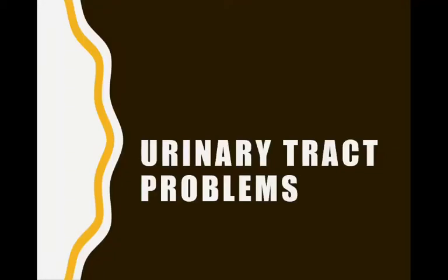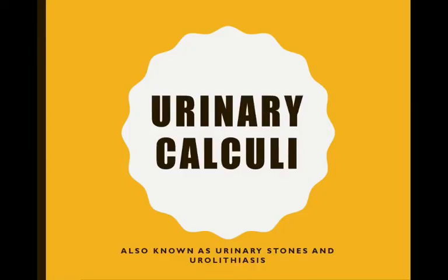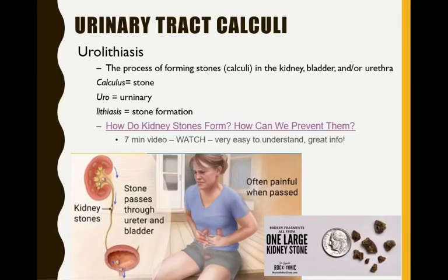This is the voiceover for urinary tract problems. The first problem is renal stones, also known as urinary calculi or urolithiasis. 'Lithiasis' means stone formation, so if you ever see a 'lithiasis' you want to look at what's in front of it to find out where the stones are. 'Uro' is urinary, so urolithiasis. You'll also hear of cholelithiasis — those are bile stones, which we'll cover next week.